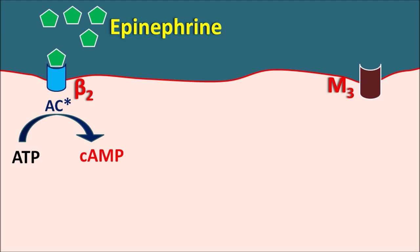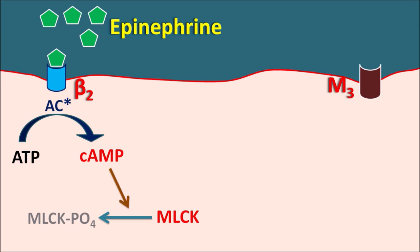Cyclic AMP plays an important role as a secondary messenger, producing bronchodilation. It acts on an important target, MLCK — myosin light chain kinase — which is required for contraction of the bronchial smooth muscle. When MLCK is phosphorylated, it is converted into an inactive form. Cyclic AMP promotes this inactivation of MLCK, preventing contraction and resulting in bronchodilation. In this way, epinephrine produces bronchodilation through the release of the secondary messenger cyclic AMP.